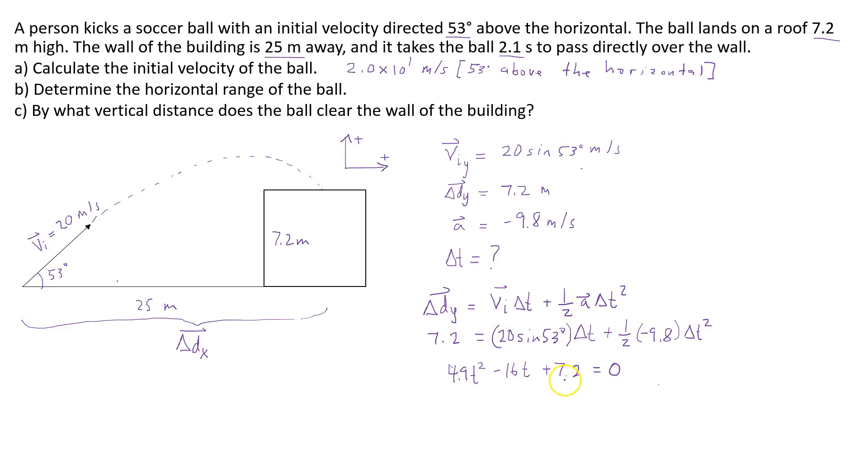And so since it has decimal values, I'm going to have to use the quadratic formula to solve it. So that's going to be t is equal to negative b, so that's 16 plus or minus square root negative 16 squared minus 4 times 4.9 times 7.2, so 4ac, divided by 2 times 4.9.